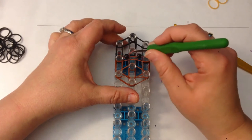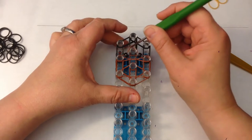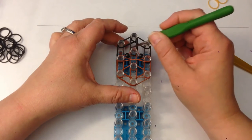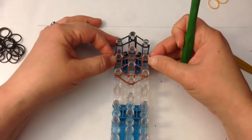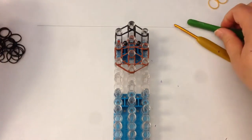When you've placed your band, take your hook and grab the top part of that band and place it over this peg here, and then it acts like a crossover band which is quite helpful.